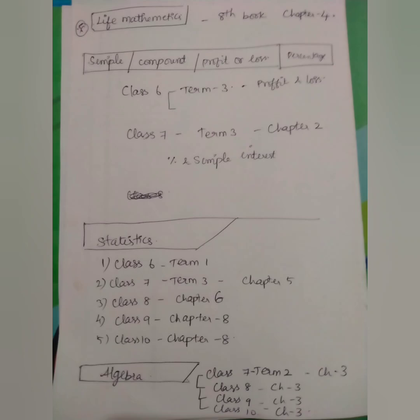Class 6, term 3: Profit and Loss. Class 7, term 3, chapter 2: Simple Interest, Compound Interest. There are seven chapters in total. Analyze — it is separated from the first step. You will see the number systems first, then Life Max, then Ratio and Proportion, then Simple Interest and Compound Interest, then Statistics and Algebra.